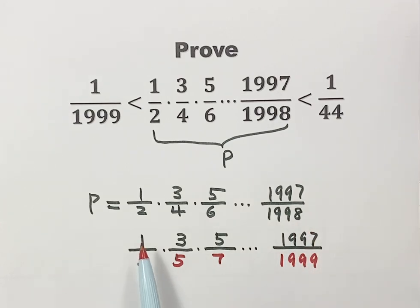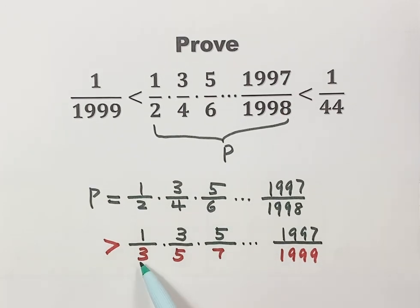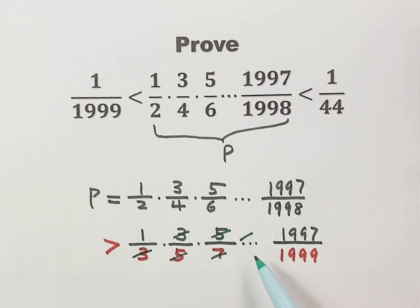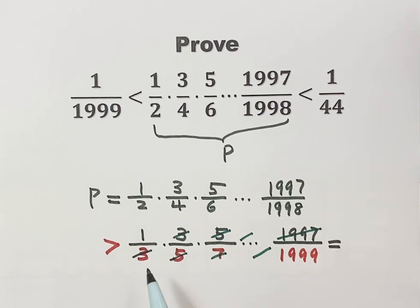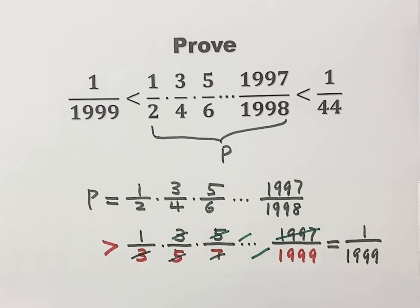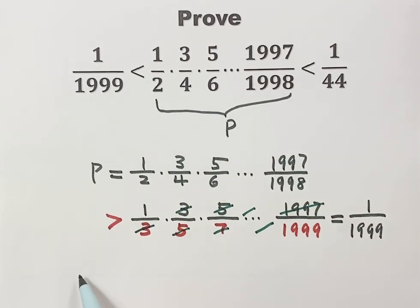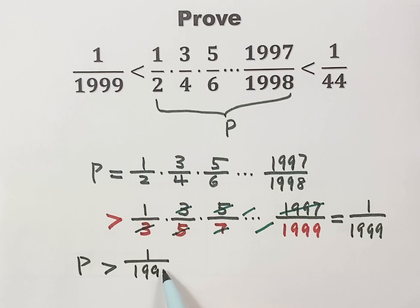That's why P is bigger than the product below. Now let's simplify: 3 and 3 cancel, 5 and 5 cancel, 7 cancels, and 1997 cancels out. The only term left on top is the first one, which is 1, and the only term left on the bottom is the last one, which is 1999. So we get P is bigger than 1/1999. We label this result as (A1).